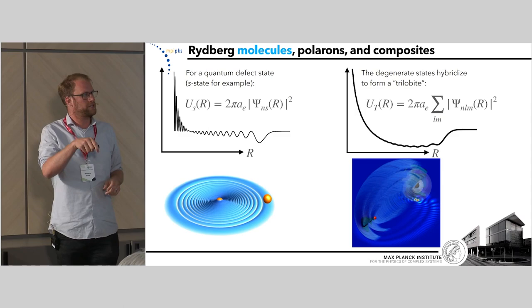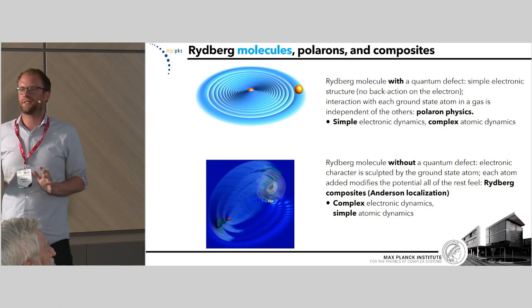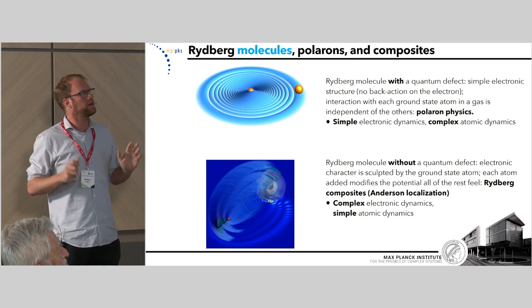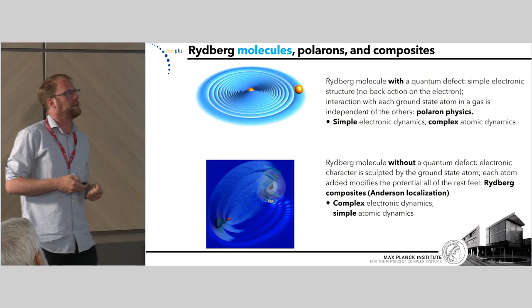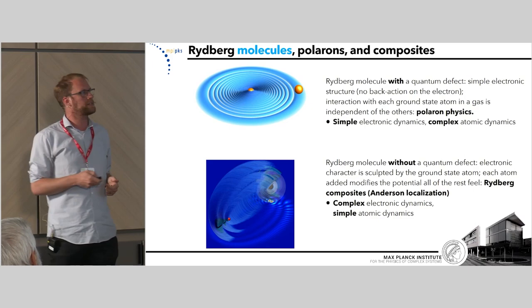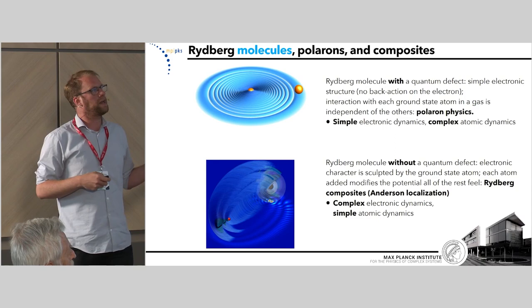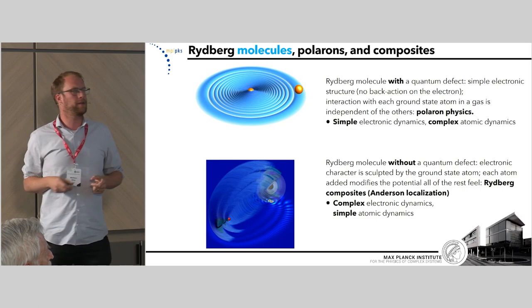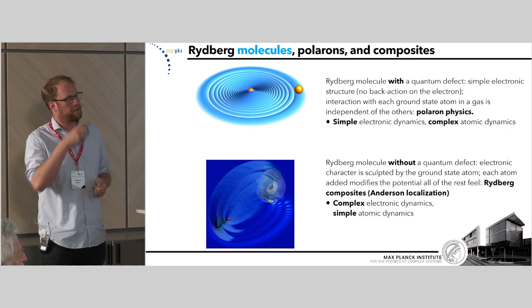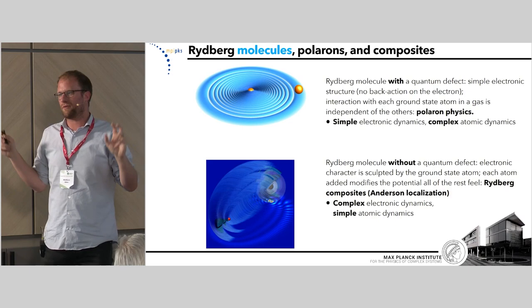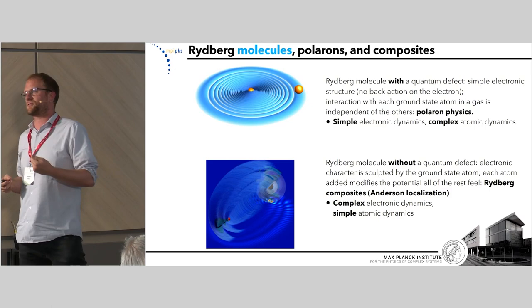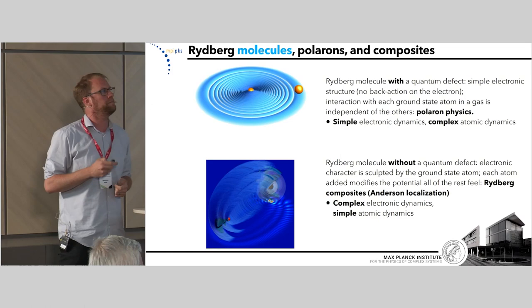This gives us two different ways to view quantum matter from these two classes of Rydberg molecules. In the first case — which I'll discuss briefly since it's still somewhat preliminary — you can add many ground state atoms to a single Rydberg atom whose electronic state doesn't change, giving interesting insights into polaron or quantum impurity physics. In the second part, for Rydberg composites, I'll show how we can study Anderson localization, where we consider the ground state atoms as fixed — perhaps held in tweezers or an optical lattice — and look at how the electron responds to their presence.